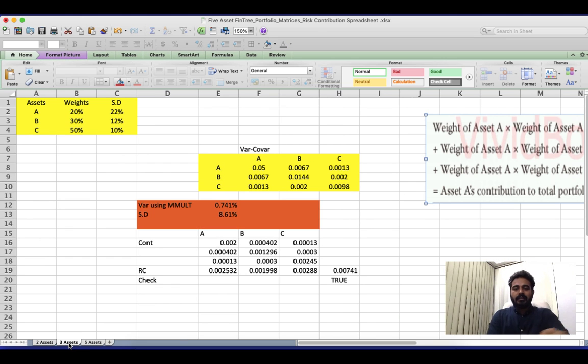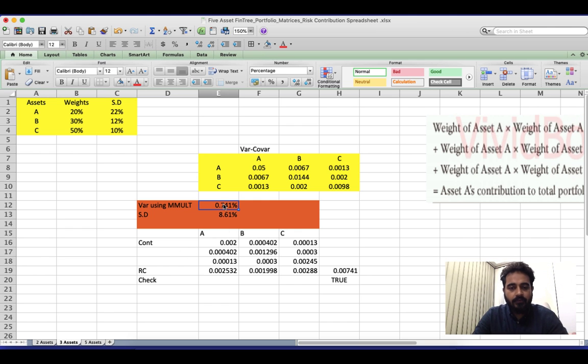Now can we do this on three assets? The answer is yes. We follow the exact same process. So I'm going to build that MMULT formula for you one more time just so that you get an understanding of what we were trying to do.